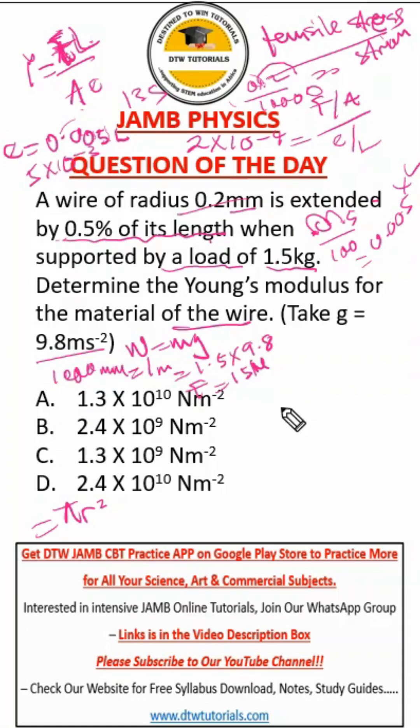So now we can now put all this into our formula. So our F, what is our F? Our F is 15. Our L, we don't know. And what is our A? Our A is what? Our area. Oh, we've not done our area yet. Sorry.